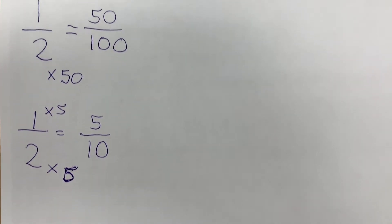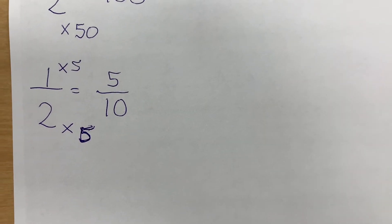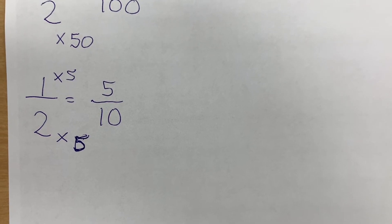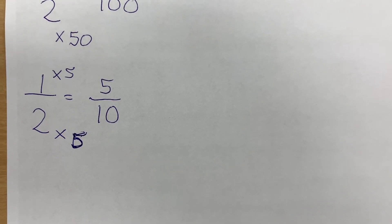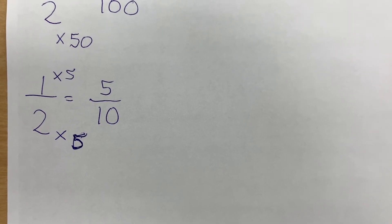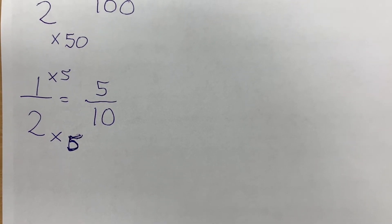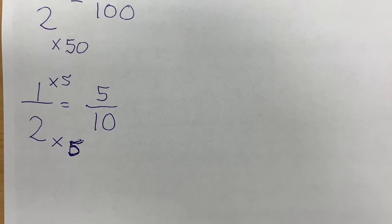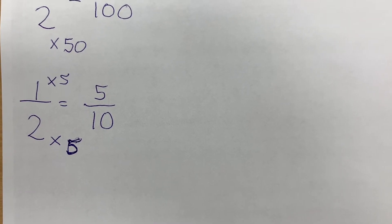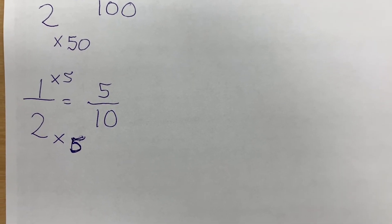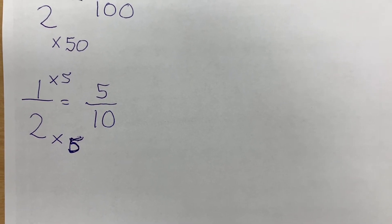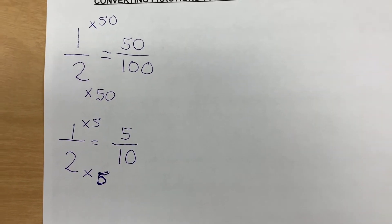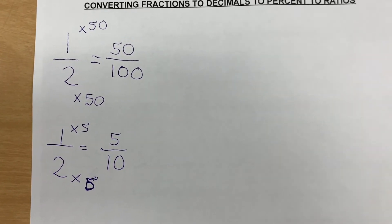Another way we could have done it is we could multiply one half by 5, which gives us 10 — it's a base 10 number. And the numerator again: 1 times 5 is 5. So 5 tenths, or 50 over 100.